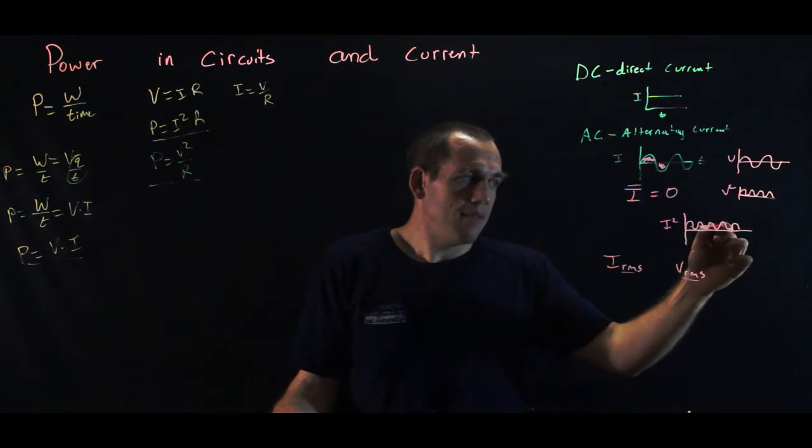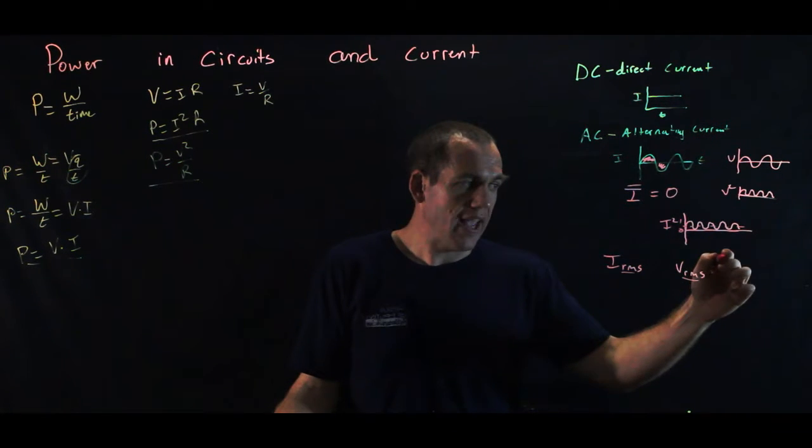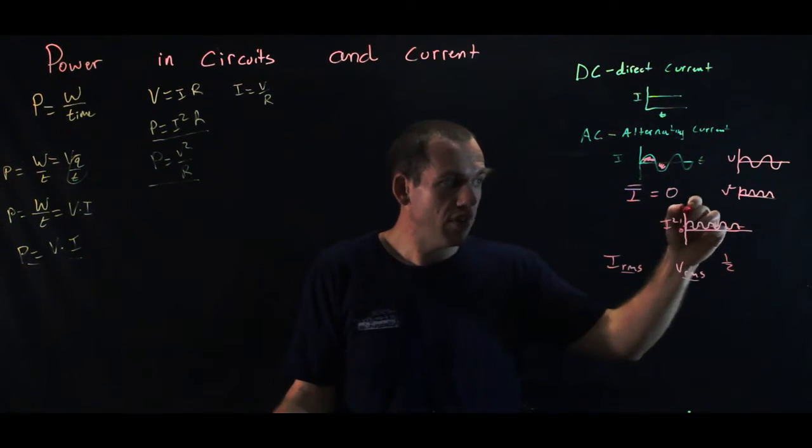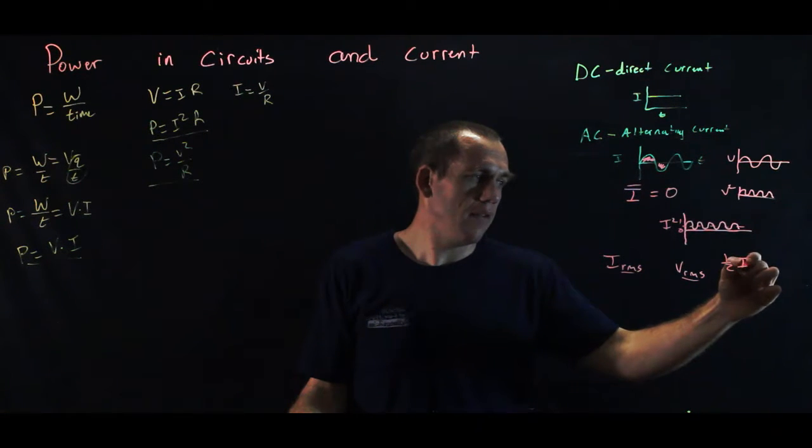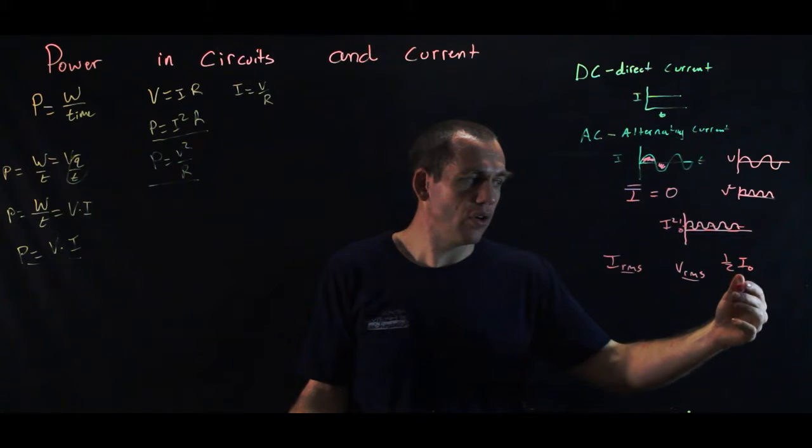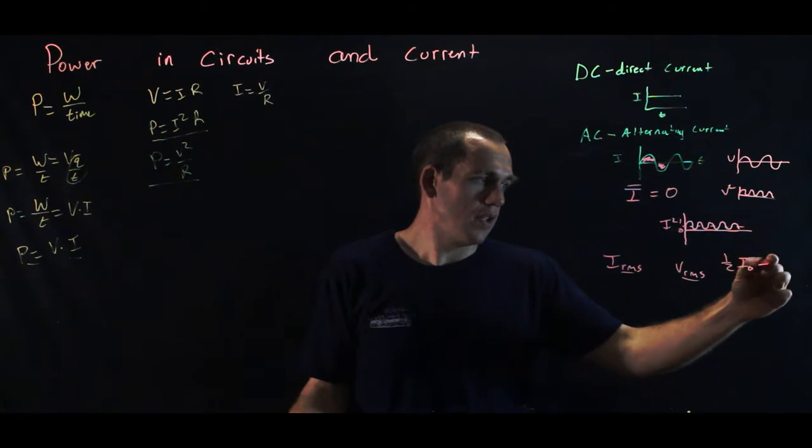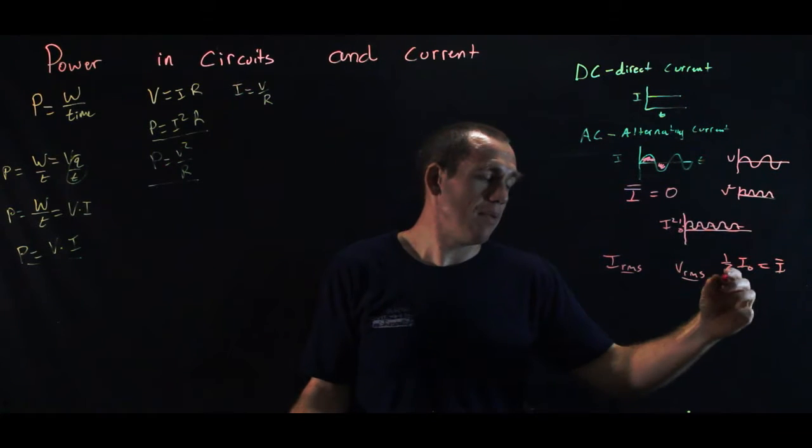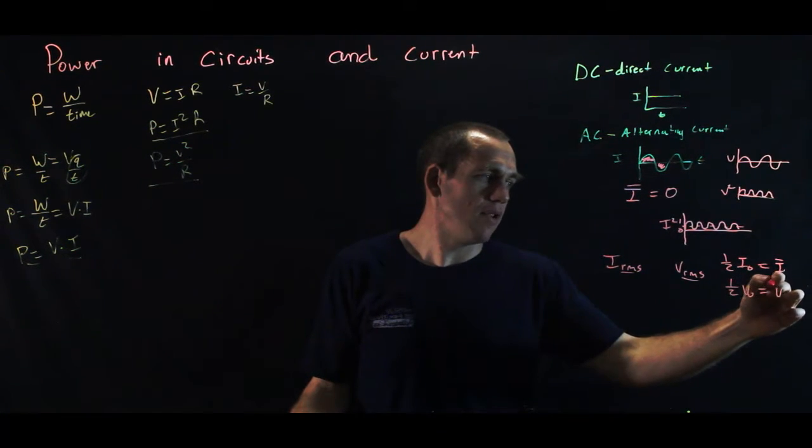Now it makes sense, this is oscillating between zero and one, that the average is a half of whatever the peak current or voltage is. So one-half of I0, that's our peak current, is equal to the average current. So the bar over the top means the same. And by the same argument, one-half V0 is equal to the average voltage.